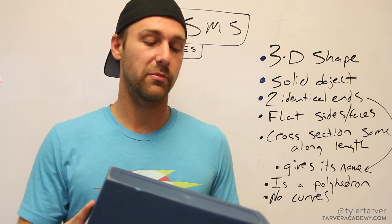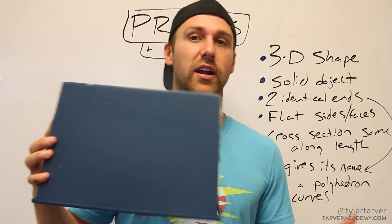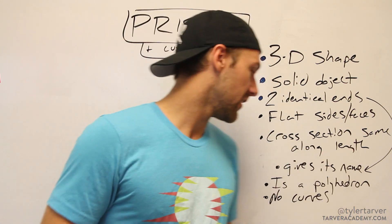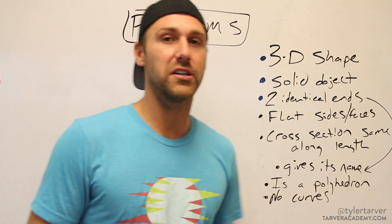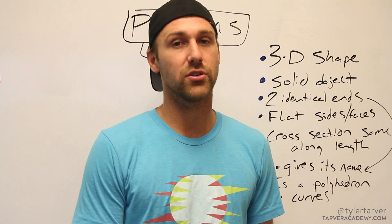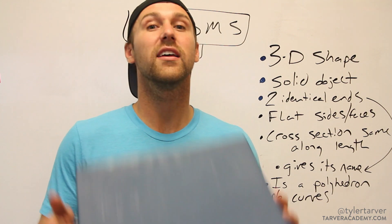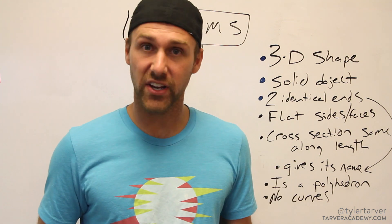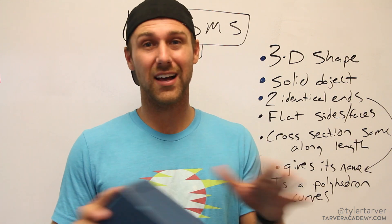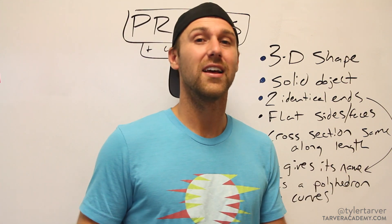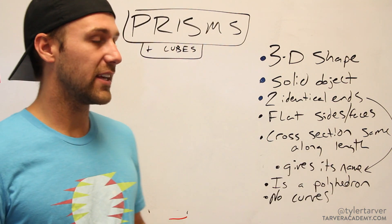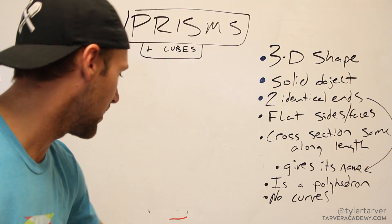A prism is a polyhedron because it's all straight lines and flat — no curves. If it did have curves it wouldn't be a polyhedron. A sphere, for example, has curves and is not a polyhedron. Prisms have straight lines and flat faces, so they are polyhedrons.